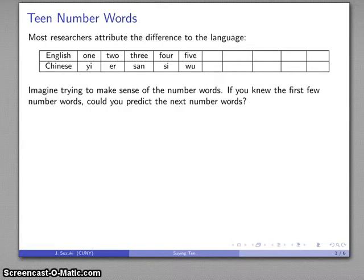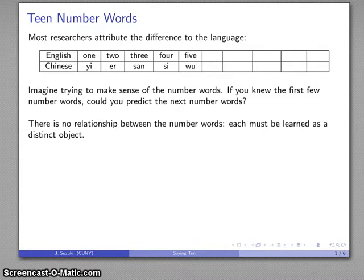The next few number words are going to be si, wu. And again, if I know the first few number words are 1, 2, 3, 4, 5, can I predict what the next number word is going to be on the basis of these? And the answer is no, you really can't. There is no relationship between these words.